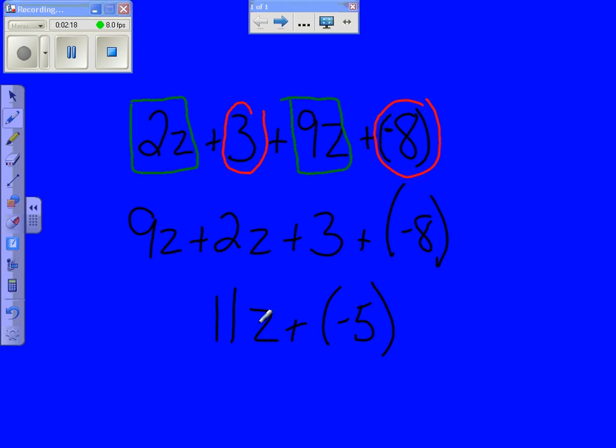Now you can leave your answer like this and it would be correct. But when I have two signs next to each other like this, I want to go ahead and get rid of one of them. This right here is just the rule of subtraction: you can add its opposite. So I can just reverse that rule of subtraction and put subtraction back there. That's the same thing as 11z minus 5. And there it is, simplified. How do I know it's simplified? I don't have any parentheses or any like terms to combine. You're all done.